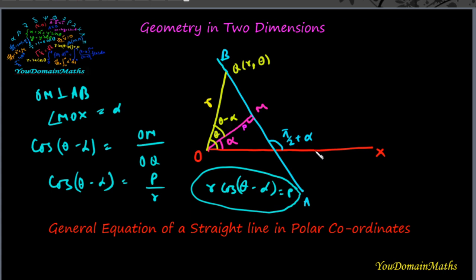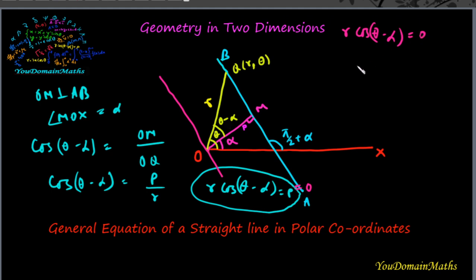If a straight line passes through the pole in the polar coordinate system, what type of equation is presented? If this equation passes through the pole, that means passes through the origin, then p equal to 0, so we can write r·cos(theta minus alpha) equal to 0. Then theta equal to pi by 2 plus alpha, which we say is beta. So theta equal to beta is the equation of a straight line which passes through the pole.